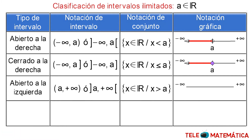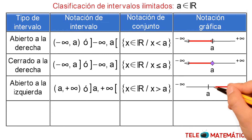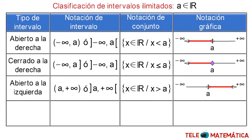Y su notación gráfica es: A se ubica en el centro, resaltamos la recta a la derecha y dibujamos una circunferencia sin colorear en su interior, que representa su exclusión.